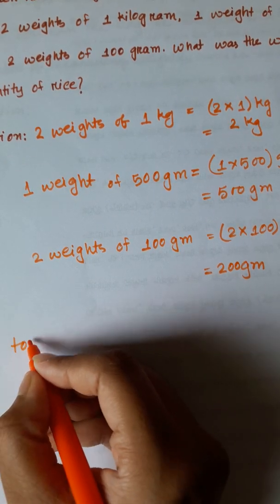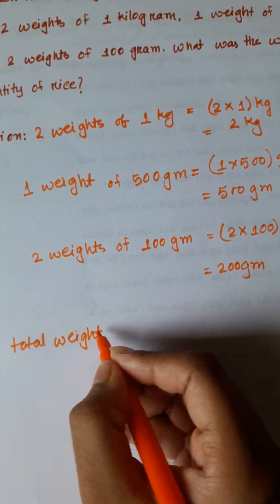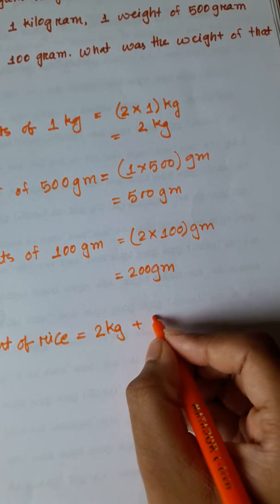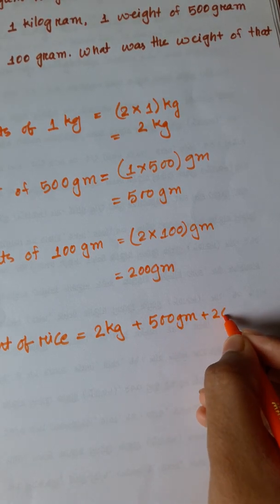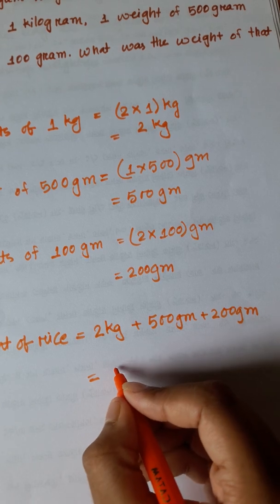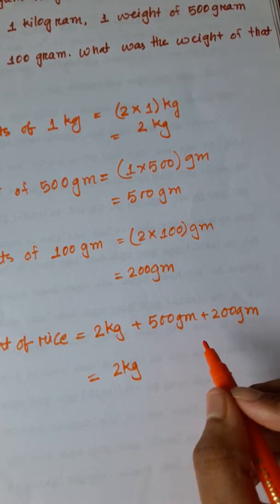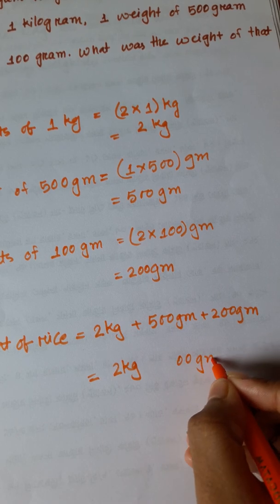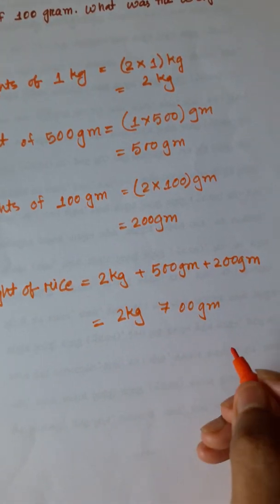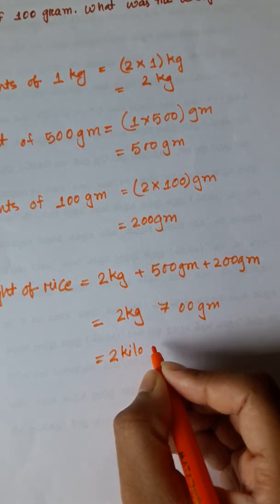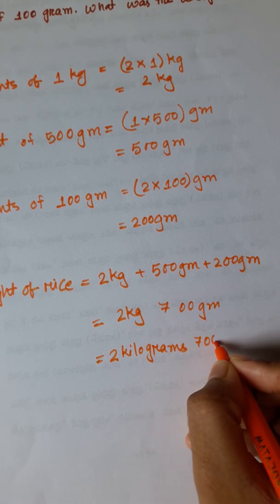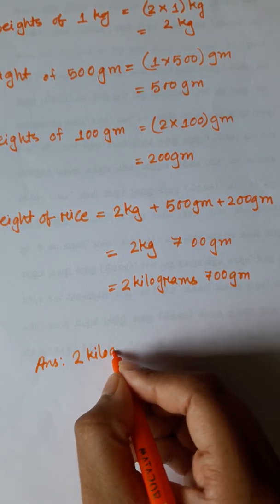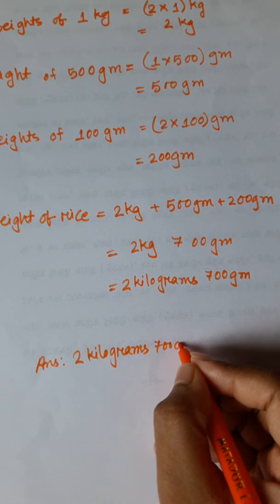So total weight of rice is equal to 2 kg plus 500 gram plus 200 gram. 2 kilograms and 5 plus 2 equals 7, so 700 gram. 2 kilograms 700 gram. So answer is 2 kilograms 700 gram.